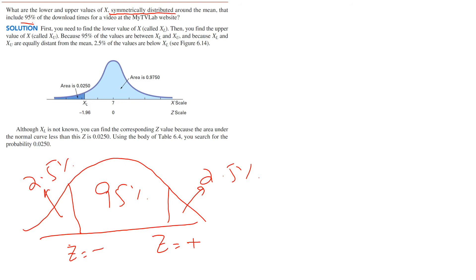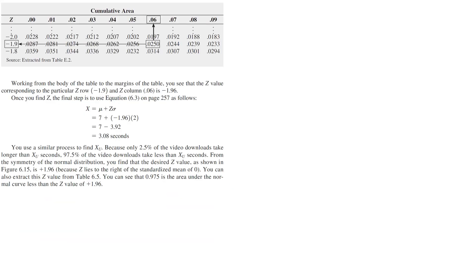The right z value will be the same but with a positive sign. In the case of a symmetrically distributed problem, it always behaves this way. Against 2.5%, which is 0.025, we look in the figure and then find the z value from the table.